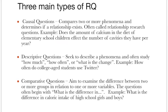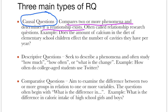There are mainly three types of research questions which we usually frame. The first is the causal question. We know about causal relationships — cause and effect. In a causal question, what we do is compare two or more phenomena and determine if a relationship exists. An example: does the amount of calcium in the diet of elementary school children affect the number of cavities they have per year?